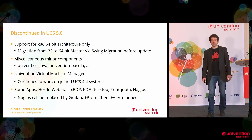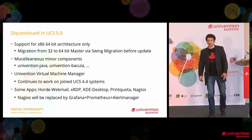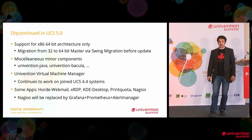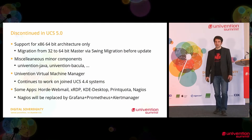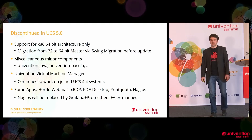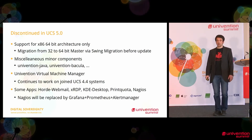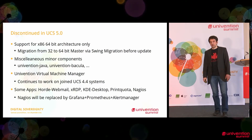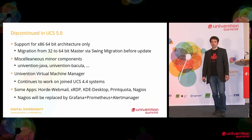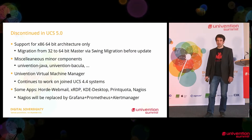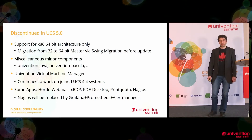We're also getting rid of smaller components — for example, Univention Java and Univention Bacula as a backup solution, because there are better solutions in the App Center. One component we part with with a heavy heart is the Univention Virtual Machine Manager, the graphical user interface to start virtual machines. Some apps will no longer be continued, including the Horde Webmailer, XRDP remote access to Windows systems, the KDE Desktop, and Nagios.